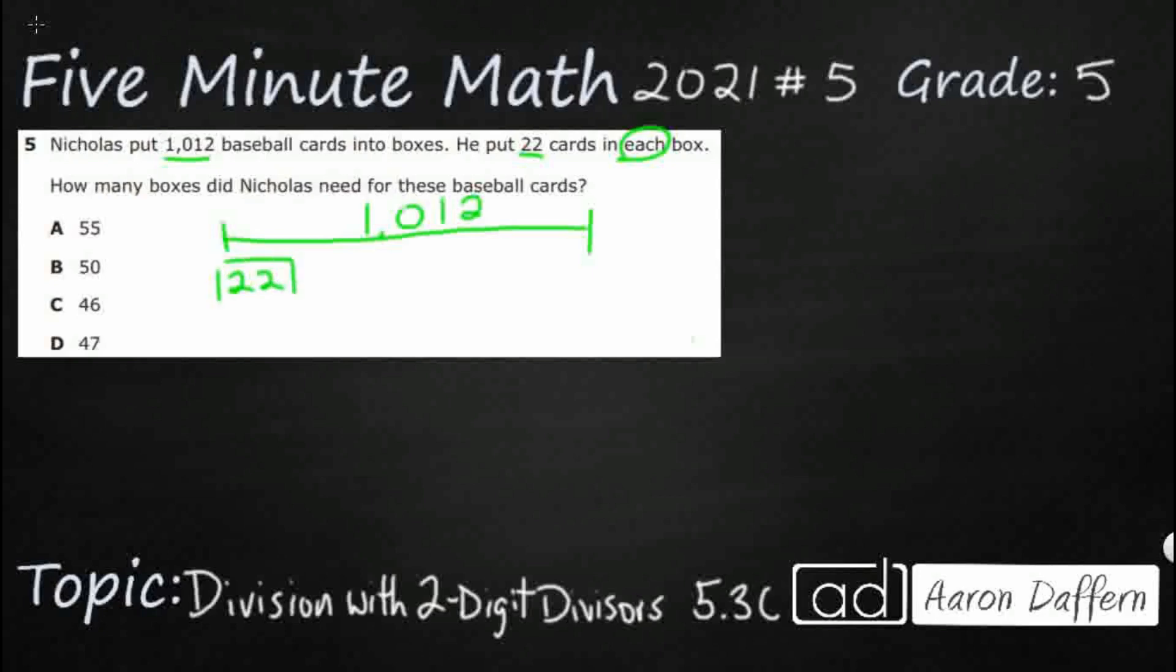What I want to do is I want to put them into boxes of 22. The question is, how many 22s does it take to get up to 1,012? Well, I don't know my 22 facts, so that's the question. And so, this is going to be a simple division problem.